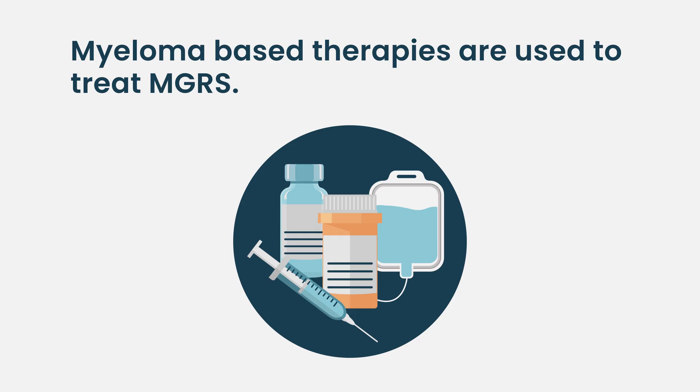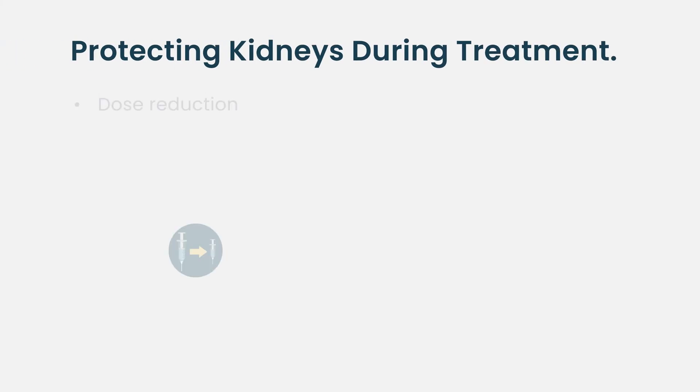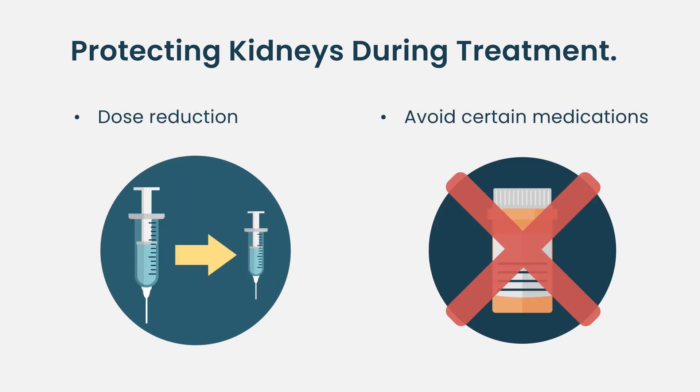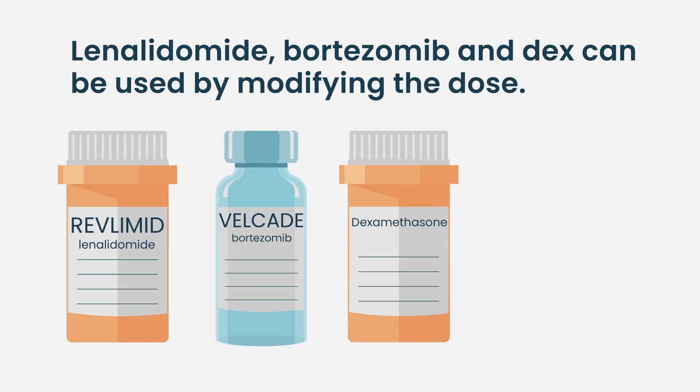In terms of treatment for MGRS, we're typically talking about myeloma-based therapies that we would use to treat somebody with traditional symptomatic multiple myeloma. When people have a kidney problem like MGRS, we have to pay special attention to the medications we use — they sometimes have to be dosed differently or we have to pick different medications. But medications like lenalidomide, bortezomib, and dexamethasone can still be used; we just have to pick the right doses for the kidney function. Even when patients go on dialysis, we can still use those medications, but we have to be very specific in how we dose them.